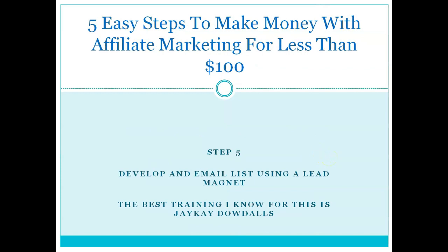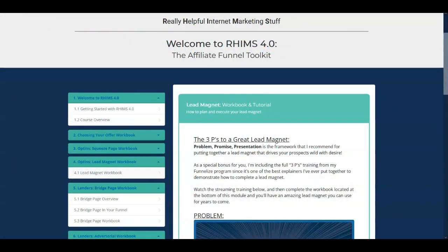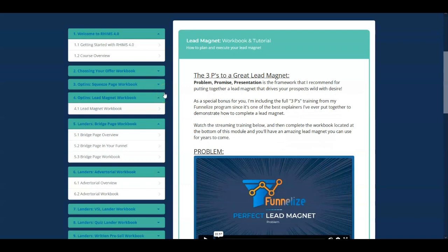Step five: develop an email list using a lead magnet. A lead magnet is vital to your business, and the best training I know of is from JK Dowdle. The course is called RIMS Affiliate Funnel Toolkit and it can be found at the link in the description. The cost is $47 for the course — once you buy it, it's yours to refer to and use. This is an affiliate link, so you can help support our channel by purchasing it. It's an excellent course.